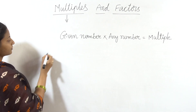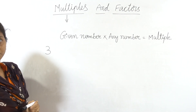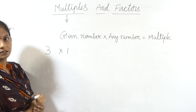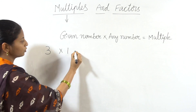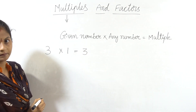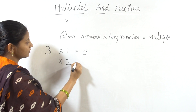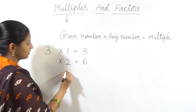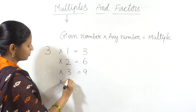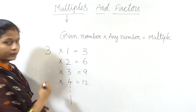For example, I have the given number 3. We multiply 3 by any number. 3 ones are 3, 3 twos are 6, 3 threes are 9, 3 fours are 12, and so on.